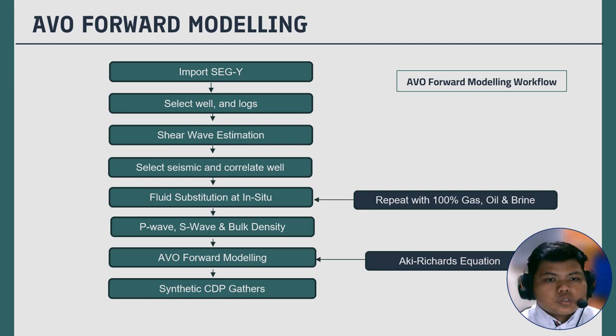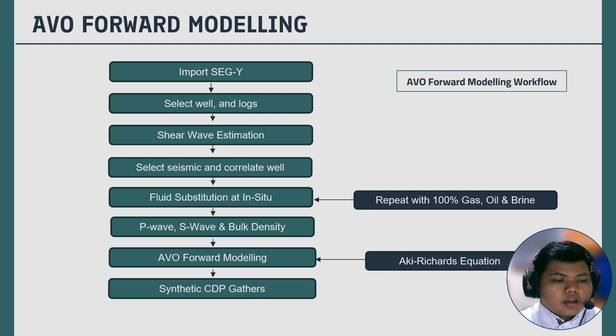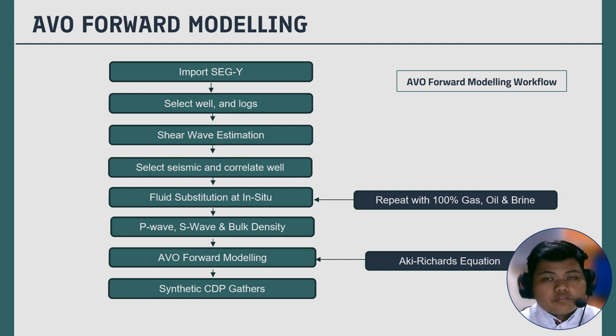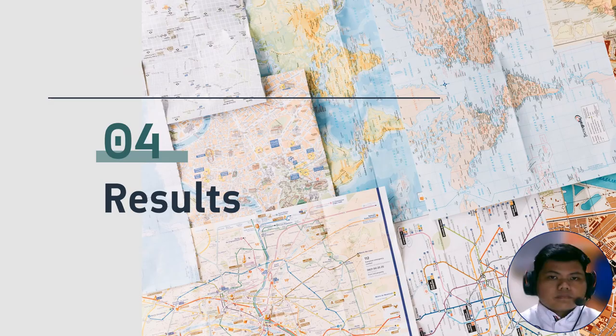Here is the overview of the AVO forward modeling workflow: import the SEG-Y files in the software, select the well and logs, apply the shear wave estimation process, select the seismic and correlate the well, and generate fluid substitution at in-situ. Then generate the P-wave, S-wave, and bulk density in different scenarios, apply the Aki-Richards equation to all scenarios to create the AVO forward modeling, and lastly generate the synthetic CDP gathers.